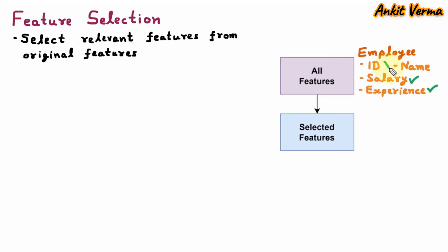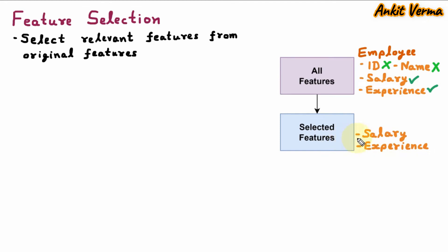Employee ID is not required and the name is not required, because to increase the salary we need the current salary and the years of experience. So these two are the selected features. By these selected features, now we can train the model very easily. So feature selection means selecting the relevant features which are important for the algorithm from all the original features.